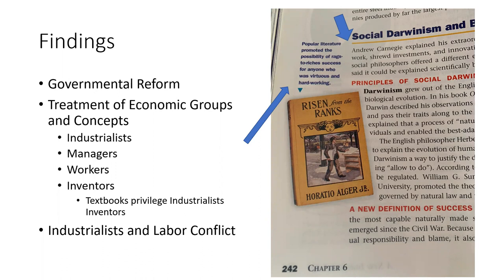Textbooks presented governmental reforms as a legitimate way to address economic problems, while dismissing, undermining, or ignoring more radical approaches. The irony is that the texts both show government is ineffective but also center the actions of government, crediting them with addressing economic problems. Industrialists, managers, workers, and inventors get unequal coverage — industrialists and inventors are given more attention and are presented as responsible for industrial progress. None of the books described industrial workers in detail, nor did they discuss how the concentration of power impacts workers, focusing only on monopolies' impact on small businesses and consumers.